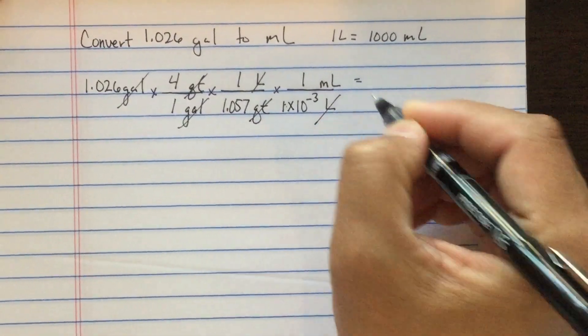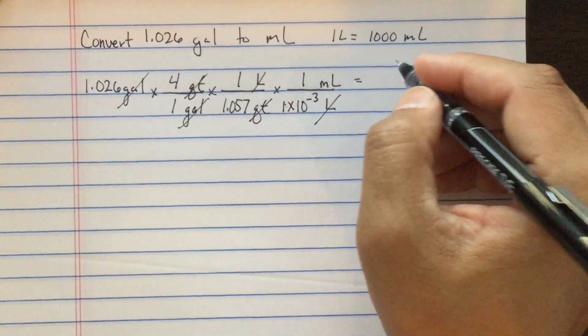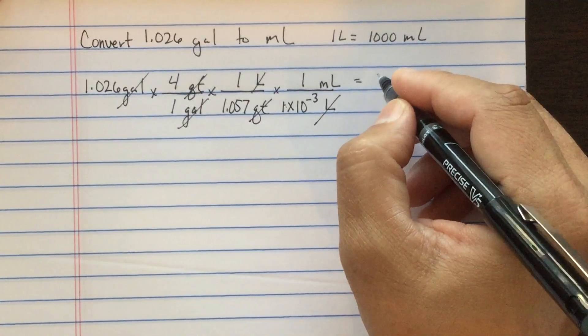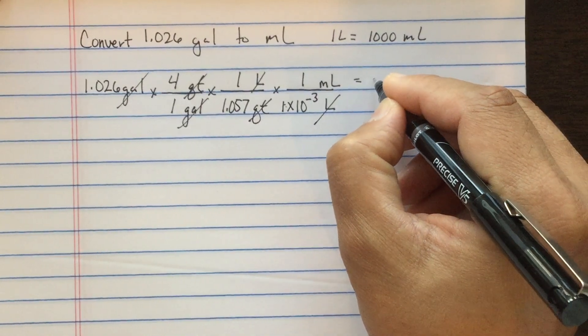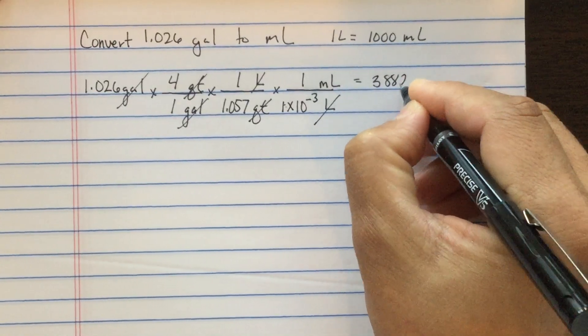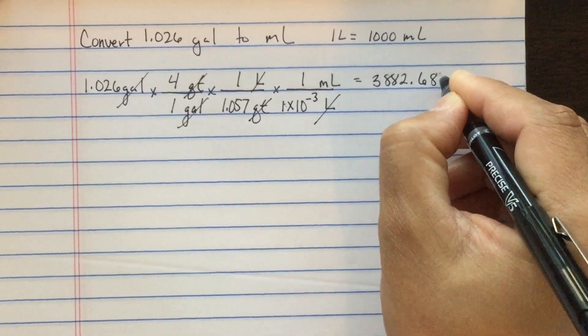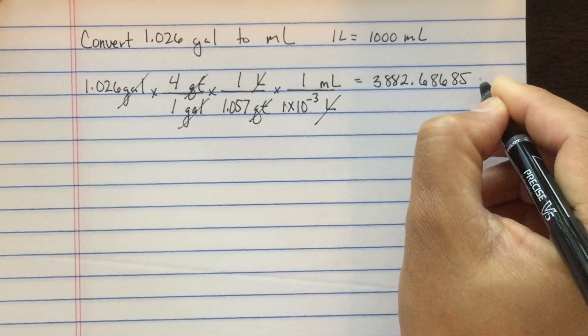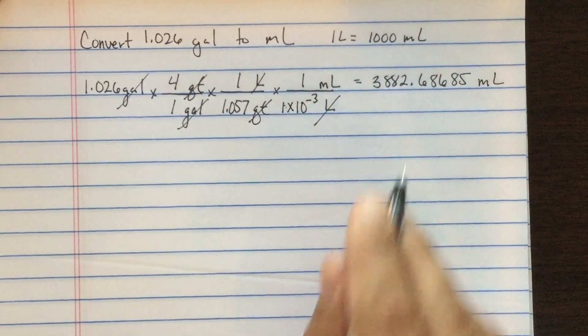When we plug this into our calculator, our calculator is going to give us a long number: 3882.68685 milliliters. Of course, this is not our answer.